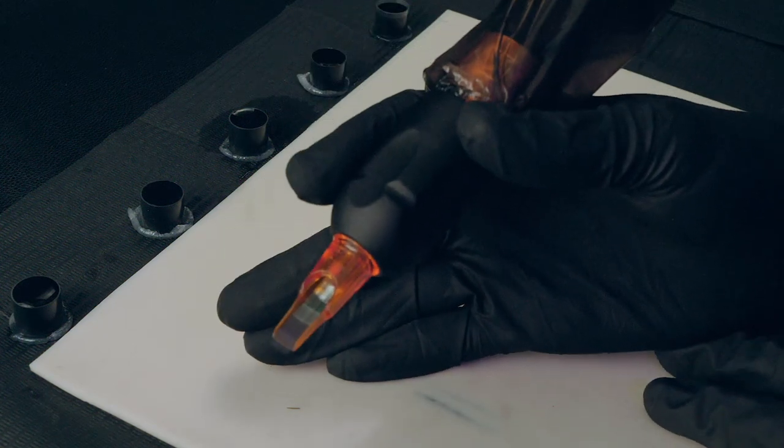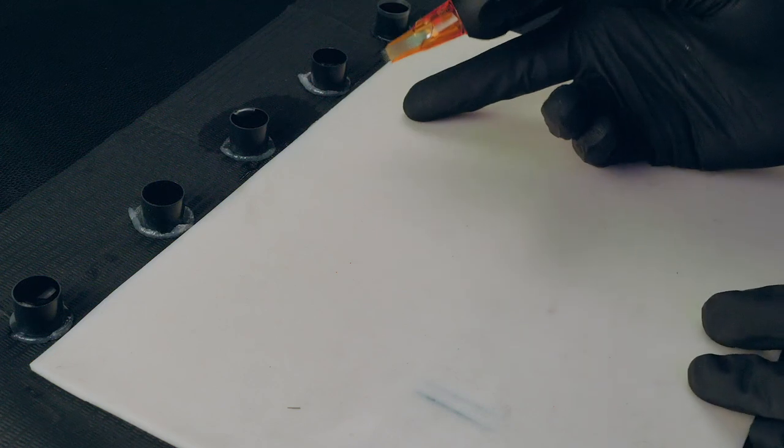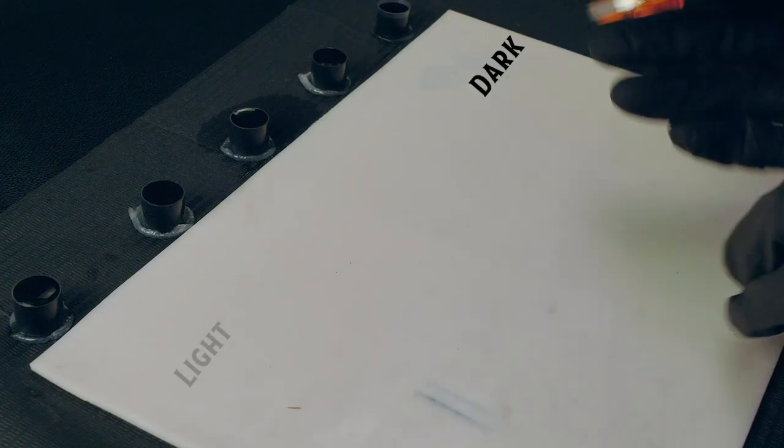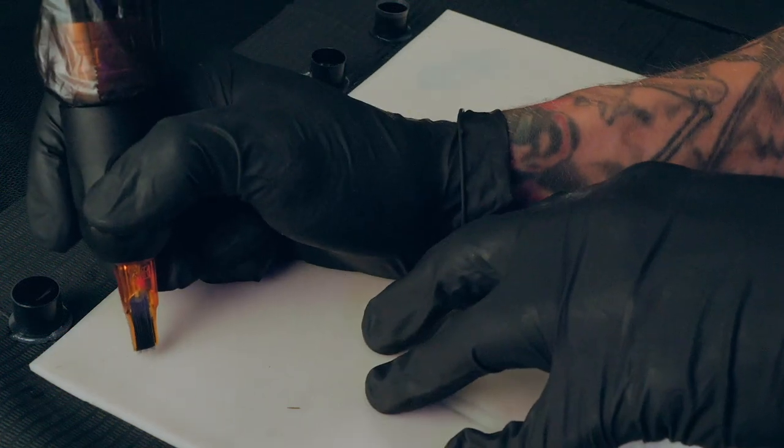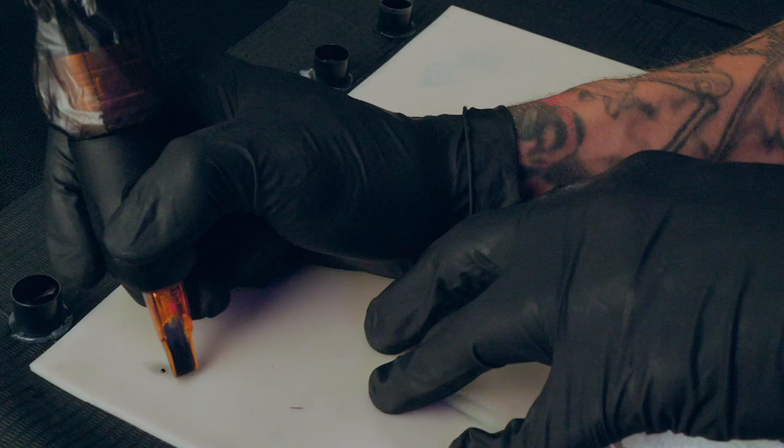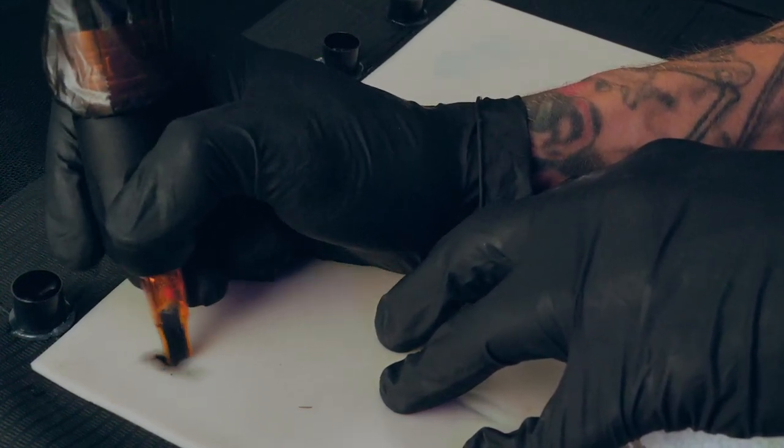I'm going to start lightest to darkest. If I started on the darkest and then dipped into this one, it would muddy up and make these darker. So going from light to dark will help the tones stay exact. One thing to keep in mind, the tones going on the fake skins are always going to be darker than they would go into an actual human skin.